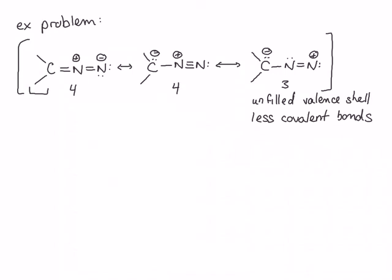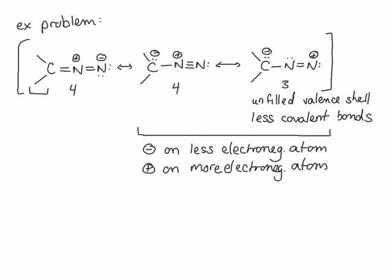Regarding rule three, all of these structures have the same separation of charge — a negative and a positive — so there's no difference between them on that basis. For rule four, in the first structure the positive and negative charges are on nitrogen, which is fairly electronegative, making that somewhat unstable. In the second and third structures, the negative charge is on carbon and the positive is on nitrogen. Since carbon is less electronegative than nitrogen, both of these are destabilized relative to the first structure. None of these structures breaks all four rules, so we must draw them all. The first structure is the major contributor, the second is a minor contributor, and the third is a very minor contributor.